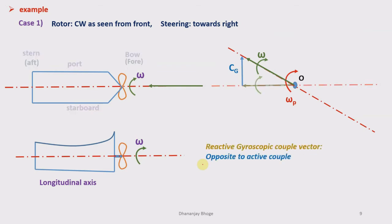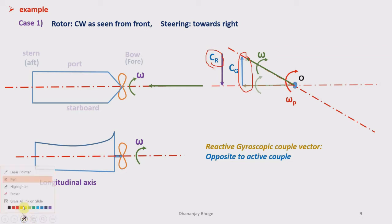The reactive gyroscopic couple vector is always opposite to the active gyroscopic couple vector. I have represented the reactive gyroscopic couple as Cr, which is opposite to Cg.